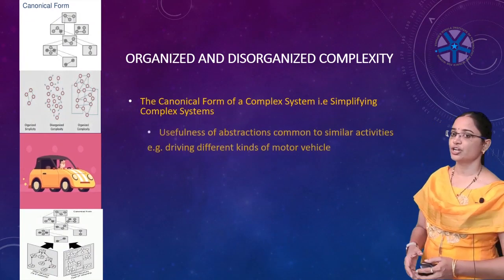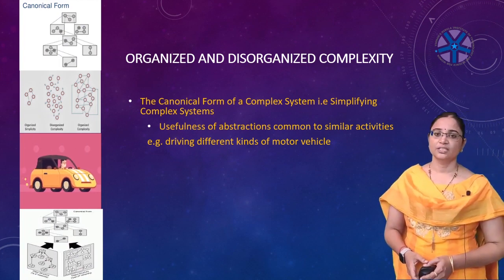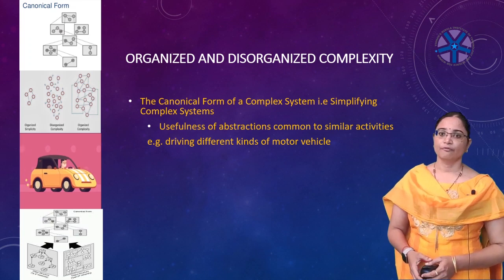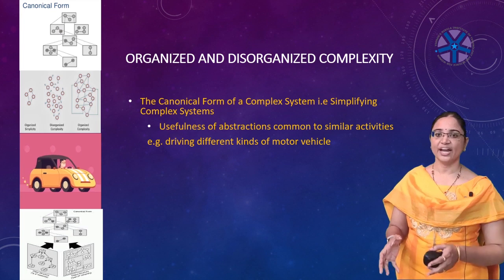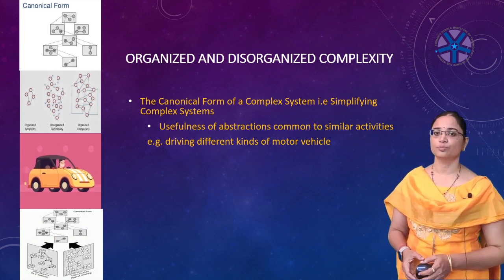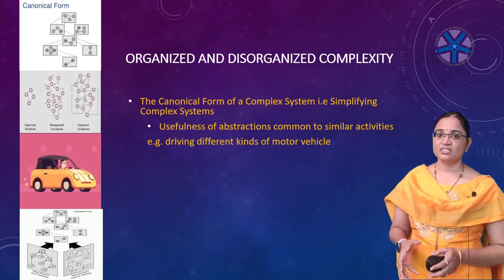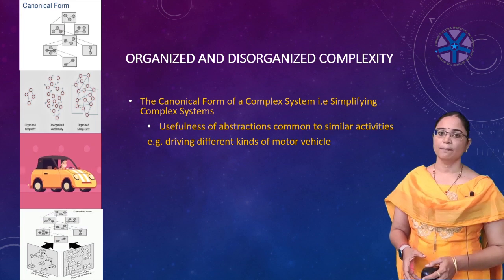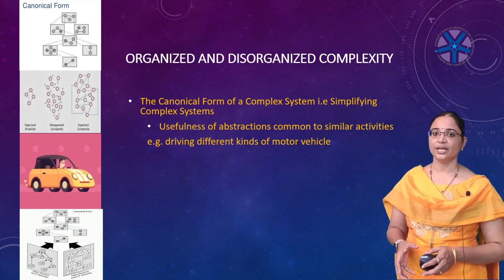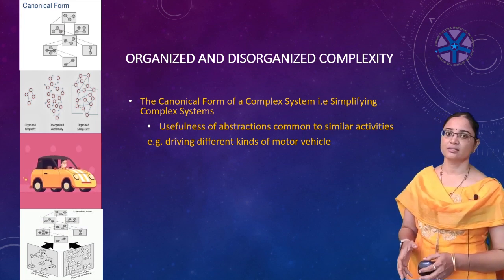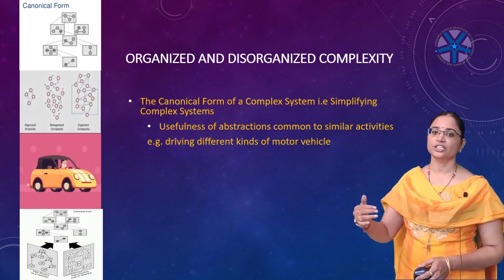Coming to the first method, simplifying complex systems: the usefulness of the parts of a car will be abstractions common to similar activities, for example driving different kinds of motor vehicles. One mechanism to simplify complex systems to make them more manageable is to identify and understand abstractions common to similar objects or activities. Understanding common abstractions would involve the insight that clutch, accelerator, and brakes facilitate the use of a wide range of transport vehicles depending on transmission of power from engine to the wheels.